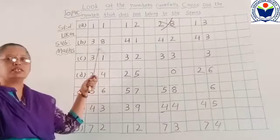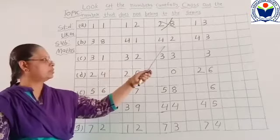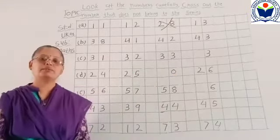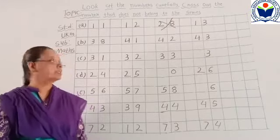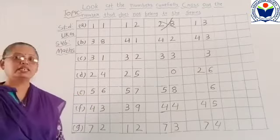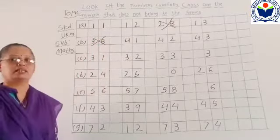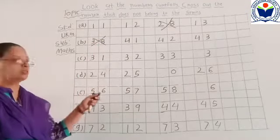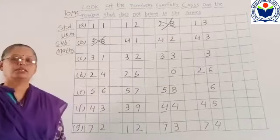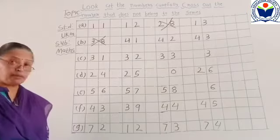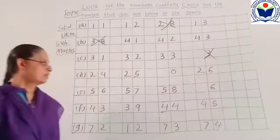Which number is this? 38, 41, 42, 43. How do you understand? Very good. Cross the sign. 31, 32, 33... very good. Cross the sign.